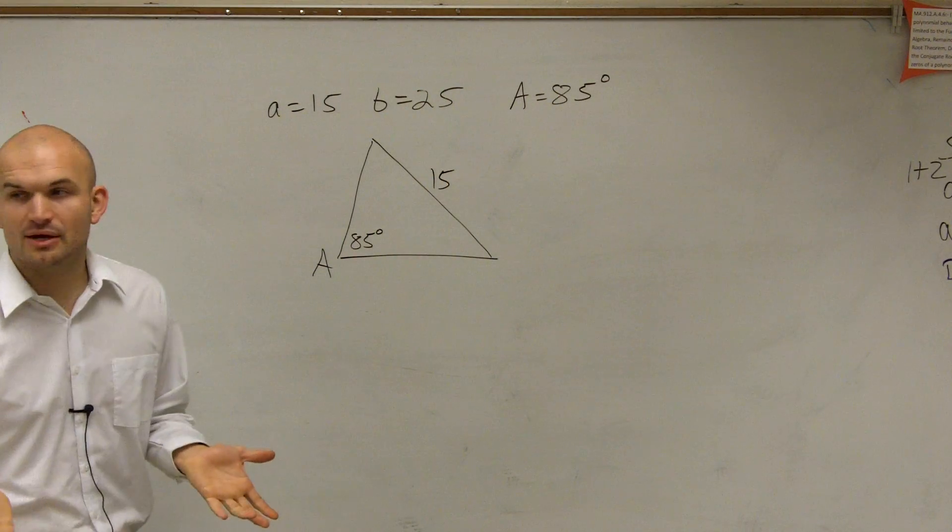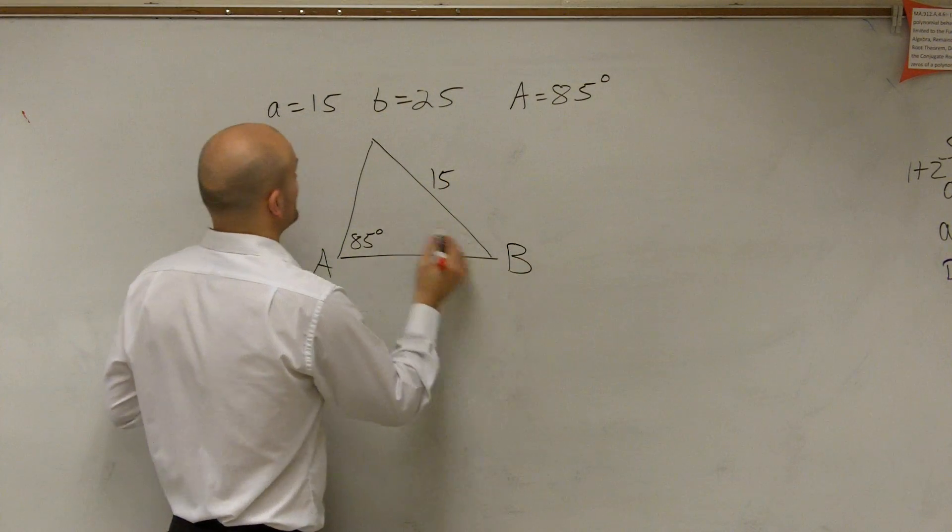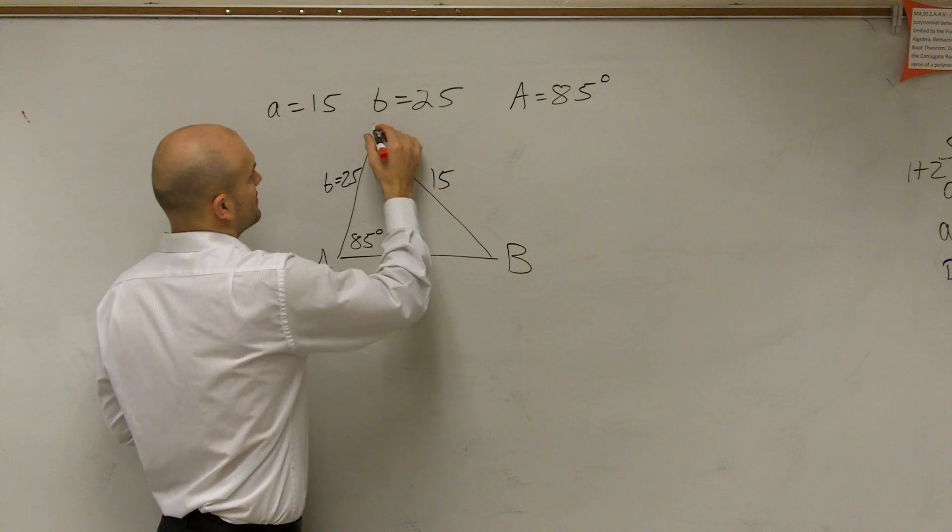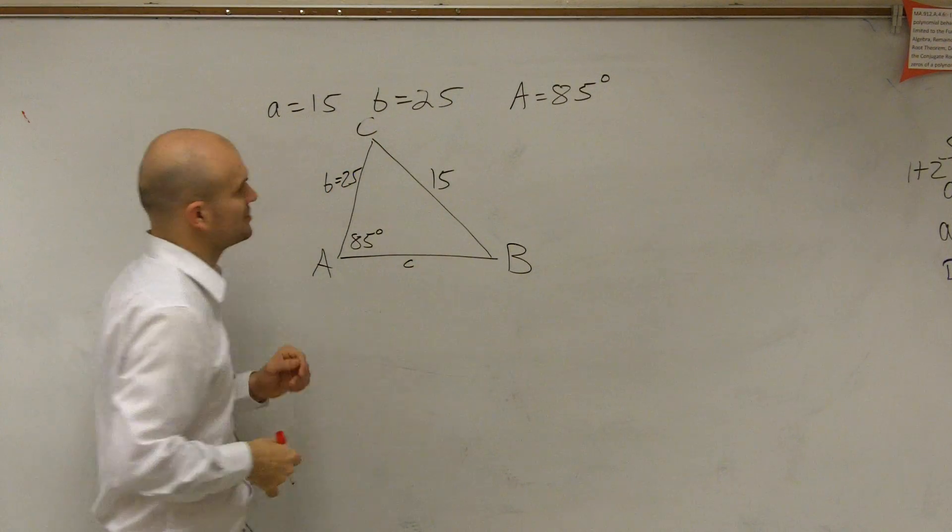And then I'm just going to pick what B is going to be. I'll say B is over here. So b equals 25. So this will be C and then little c.